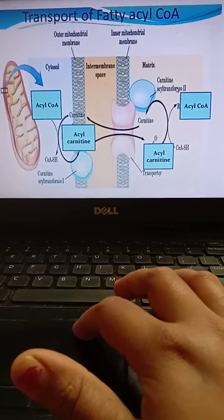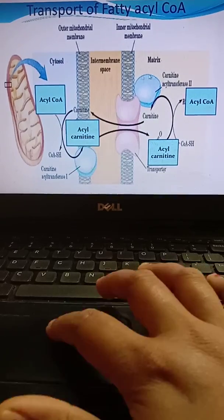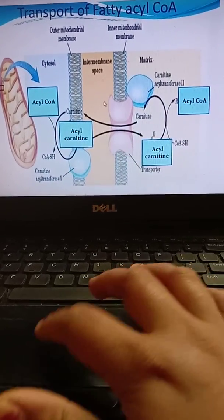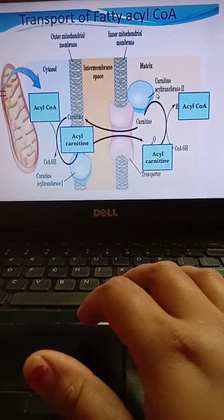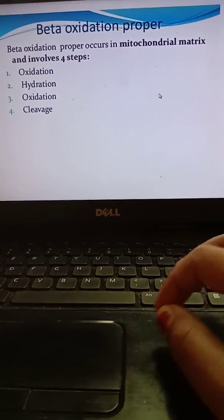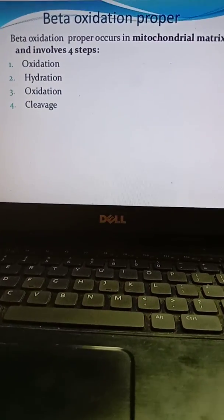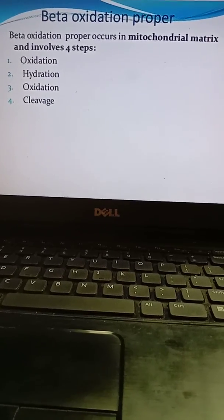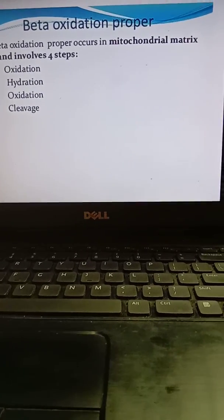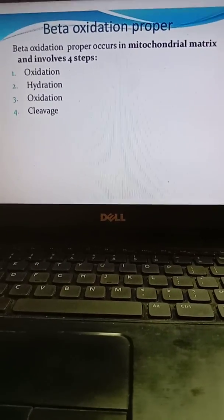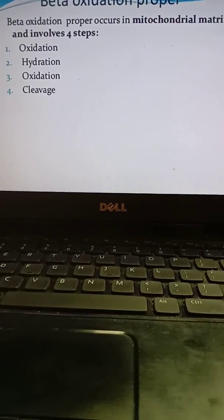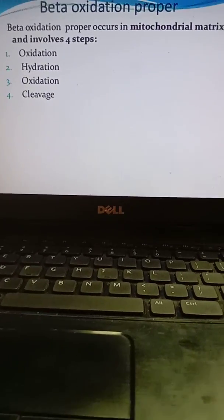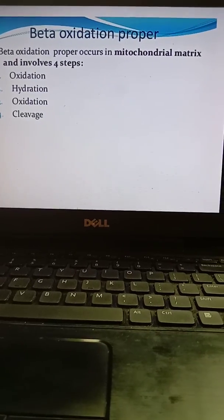This is carnitine acyltransferase II. The reaction occurs in the cytosol and then proceeds to the mitochondrial matrix. Beta oxidation proper occurs in the mitochondrial matrix and involves mainly four steps: whenever the acyl-CoA enters the mitochondria, the four steps are oxidation, hydration, oxidation, and cleavage.